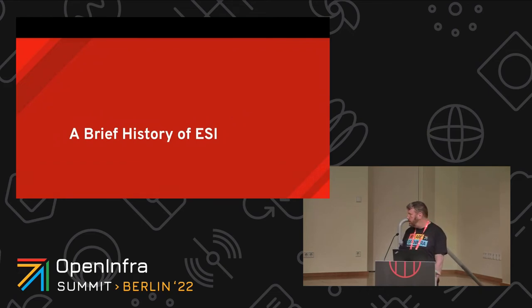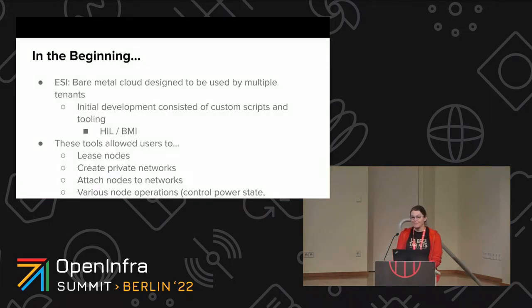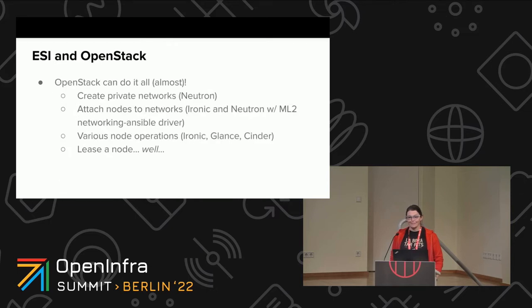My name is Tsumin Chen, principal software engineer at Red Hat. I've been working on ESI for about three years. ESI was an idea — a bare metal cloud designed to be used by multiple tenants. It was developed within the MOC through two projects: HIL, the Hardware Isolation Layer, and BMI, Bare Metal Imaging. These projects created custom scripts and tooling allowing users to lease nodes, create private networks, attach nodes to networks, control power state, do image-based provisioning, boot from a volume, and more.